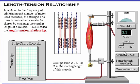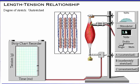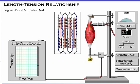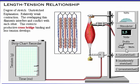Click position A, B, or C as the starting length of this muscle. At position A, the muscle is in an unstretched condition. Note the overlapping thin filaments in the diagram. The unstretched muscle produces a relatively weak contraction. The overlapping thin filaments from opposite ends of the sarcomere interfere and conflict with each other, restricting productive cross-bridge binding so that less tension develops.